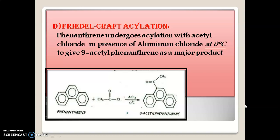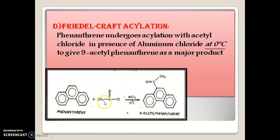Friedel-Crafts acylation: Phenanthrene undergoes acylation with acetyl chloride in the presence of aluminum chloride at 0°C to give 9-acetylphenanthrene as a major product. Here the temperature is 0°C — ice cold condition. Comparing temperatures: halogenation is at room temperature, sulfonation is at an elevated 120°C, and Friedel-Crafts acylation is at ice cold 0°C. When phenanthrene is acetylated with acetyl chloride in the presence of AlCl3 at 0°C, it gives 9-acetylphenanthrene.